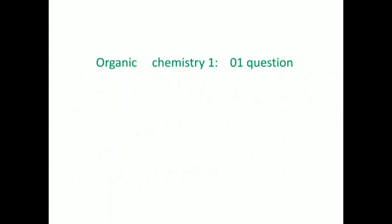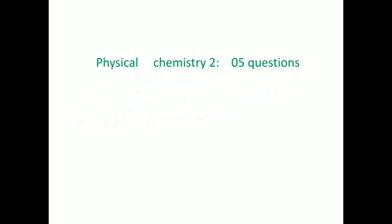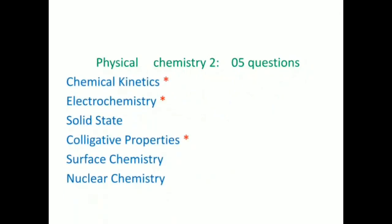Organic Chemistry 1 has only one question. You have only two topics in this, out of which GOC is more important. Physical Chemistry 2 will have five questions, and you have around six topics, out of which three are more important. So focus majority of your effort on them.